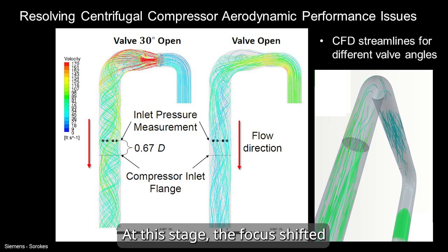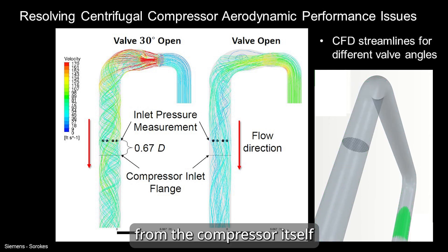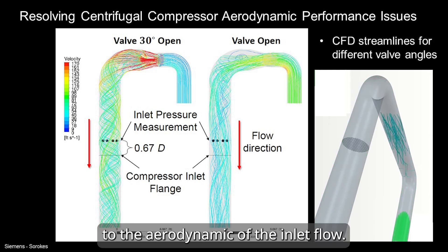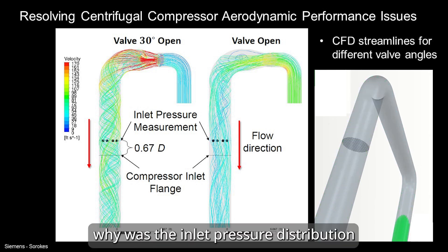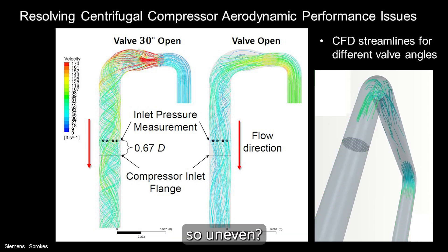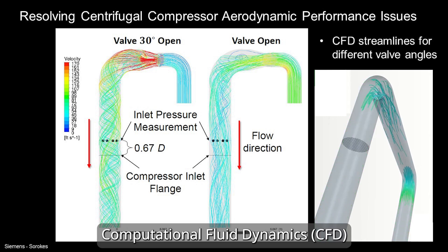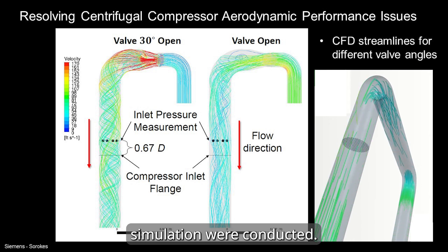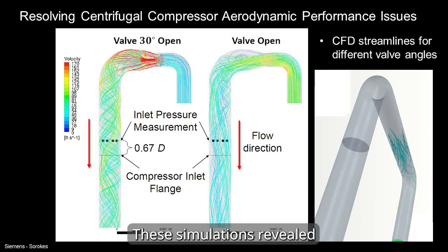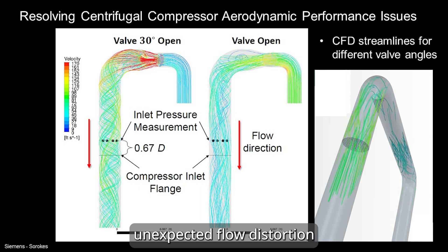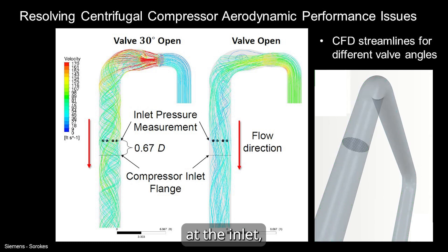At this stage, the focus shifted from the compressor itself to the aerodynamics of the inlet flow. The key question was: why was the inlet pressure distribution so uneven? To better understand the flow behavior, computational fluid dynamics (CFD) simulations were conducted. These simulations revealed unexpected flow distortion at the inlet, likely due to subtle variations in upstream conditions that were not evident from the physical inspection alone.